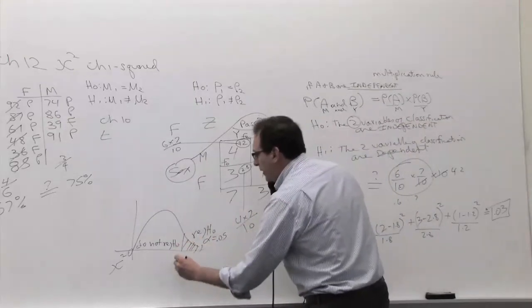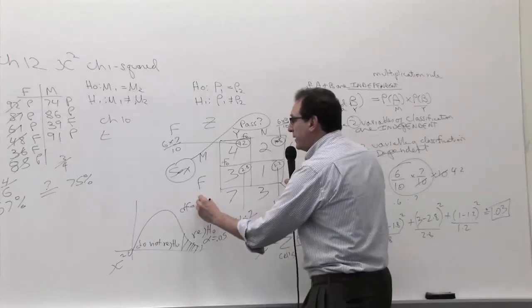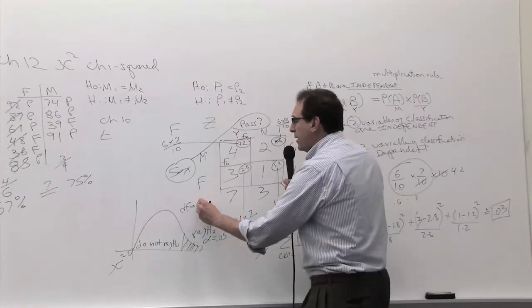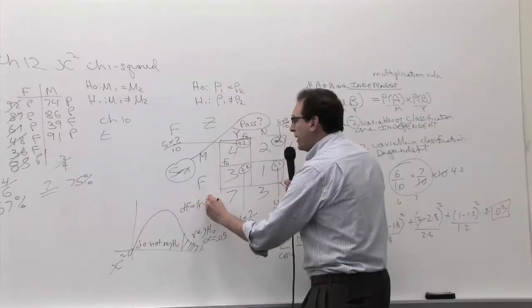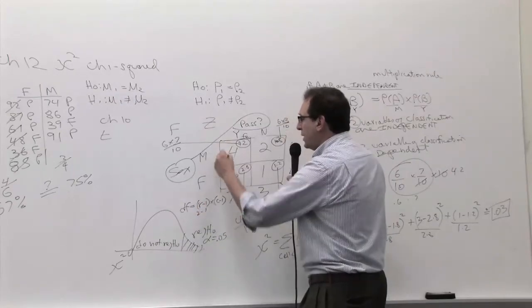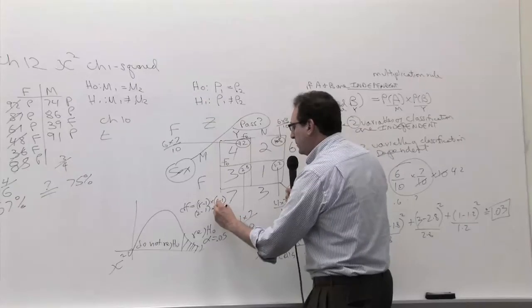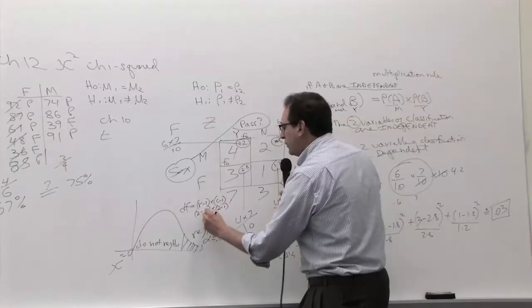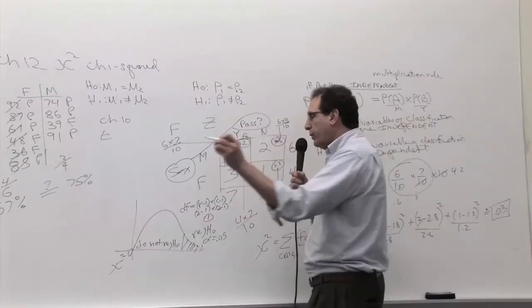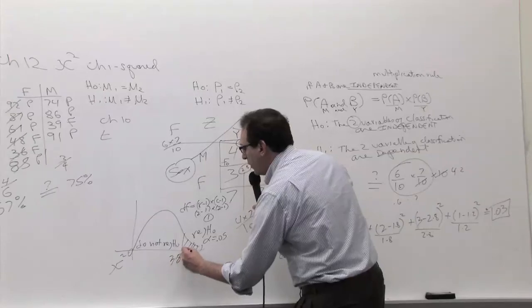The degree of freedom, surprisingly, doesn't depend upon the sample size like it always did, but it depends upon, like it did in the beginning of chapter 11, the number of rows or columns: (R - 1) × (C - 1), which is the number of rows - in this example, two rows - times the number of columns, which is two minus one, which is equal to one times one, or one. And if you go to the back of the book and you look up the 0.05, the first degree of freedom on the chi-squared table is 3.841, I recall from class.